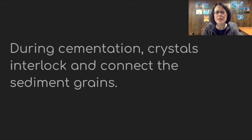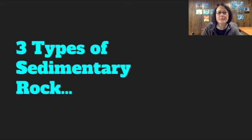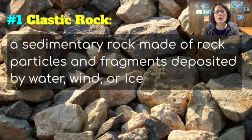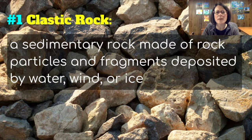During cementation, crystals interlock and connect the sediment grains — it dries out, a lot like concrete drying out. There are three types of sedimentary rock. The first type is clastic rock: a sedimentary rock made of rock particles and fragments deposited by water, wind, or ice. This is probably the one you're most familiar with.